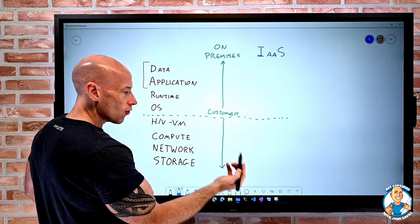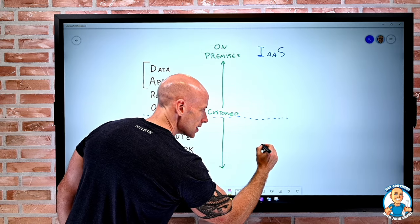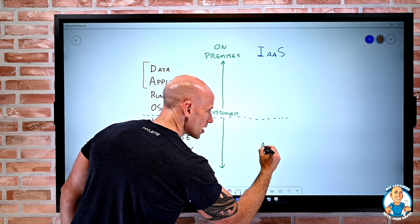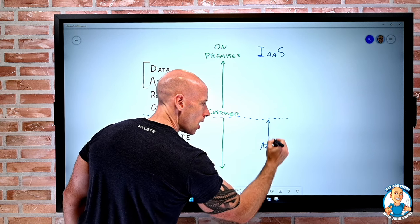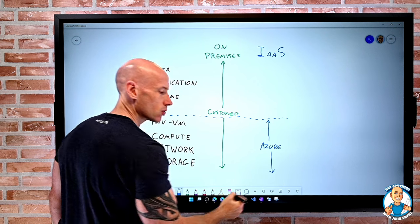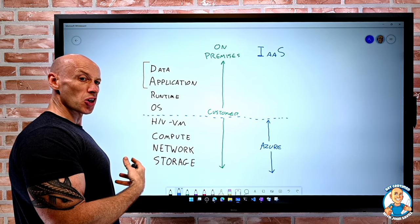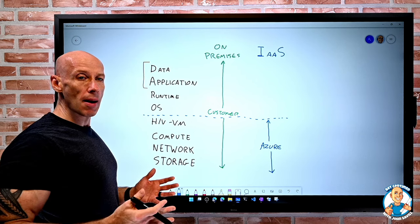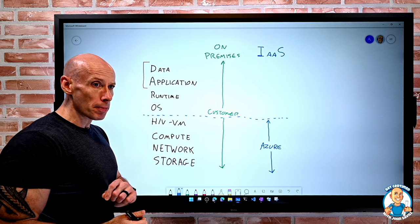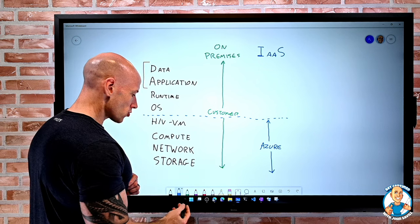So I can draw this line for IaaS here. So the responsibility of all of those things, in this case, I can say is Azure's responsibility. I am not worried about a physical server, I'm not worried about a certain disk, I'm not worried about a network switch, I'm not worried about managing or patching a hypervisor. None of that is my problem.